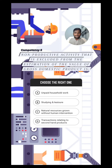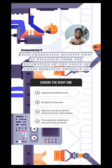Natural resources grown without human intervention — fishes growing in the ocean, mangoes growing in a forest — there's no way to know how many mangoes or fish there are, and there's no way to give a value because there's no human intervention. If there's no human intervention, you can't add it to the measurement of the value of GDP.